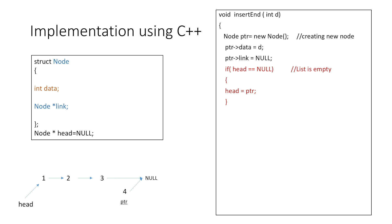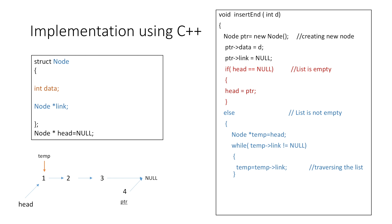Now we need to check a condition: if head is null, meaning the linked list is empty, then we are creating the first node, so we point head to our newly created node. But in our case the list is not empty, so we take a temporary pointer and equate it to head. Next we traverse the linked list until we reach the element whose link part is null. We then point the link part of this node to our newly created node and we are done. The code is linked in the description — thank you for watching.